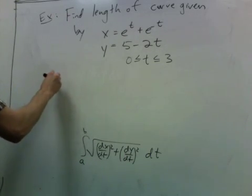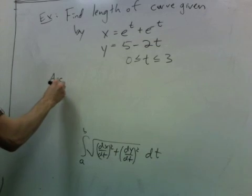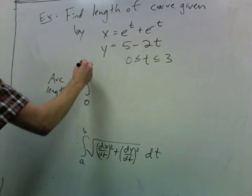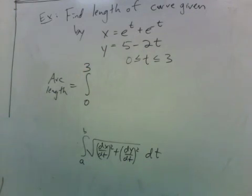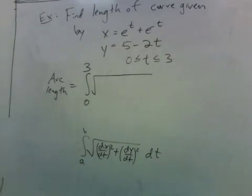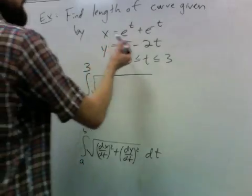So using the formula, we have the integral from 0 to 3. So we have the derivative of the square root. The derivative of x squared, let's see,